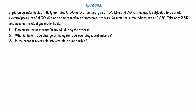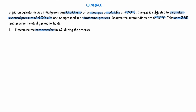Let's look at an example. A piston-solenoid device initially contains 0.5 m³ of an ideal gas at 150 kPa and 20°C. The gas is subjected to a constant external pressure of 400 kPa and compressed in an isothermal process. The surroundings are at 20°C, Cp is taken as 25R, and the ideal gas model holds. Question 1: determine the heat transfer in kJ. Question 2: what is the entropy change of the system, surroundings, and universe? Question 3: is the process reversible, irreversible, or impossible?